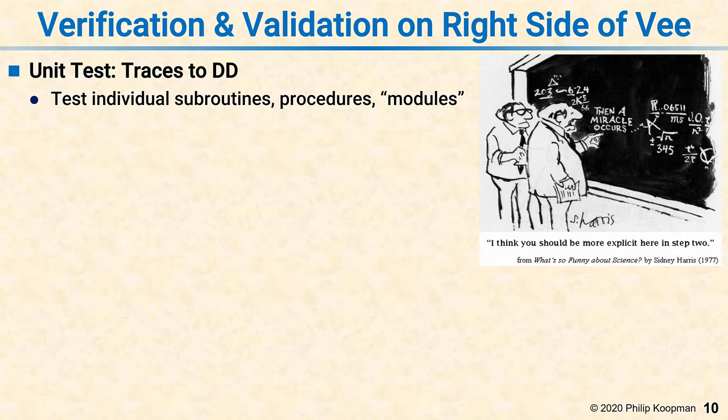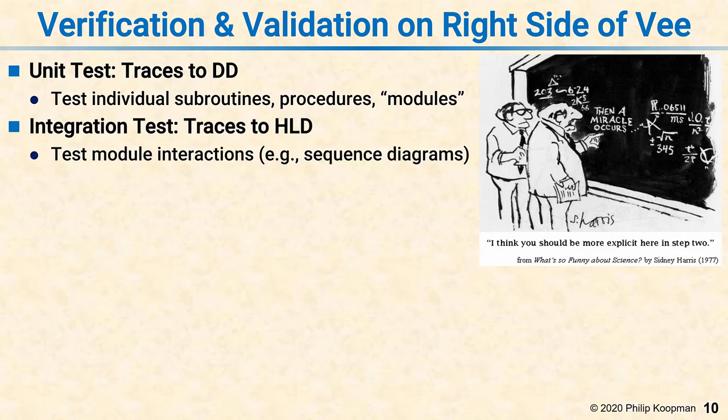When you've thoroughly shaken down the modules, you move on to integration test. Now because you've already covered all the code in the unit test, the point of integration test is not to do that again. Rather, integration test asks the question: do all the pieces work together? So unit test asks, does each piece work? And integration test asks, do the pieces in general work together as pairs and triples and clusters of modules? Integration test traces to the high-level design, which is also about whether the pieces work together.